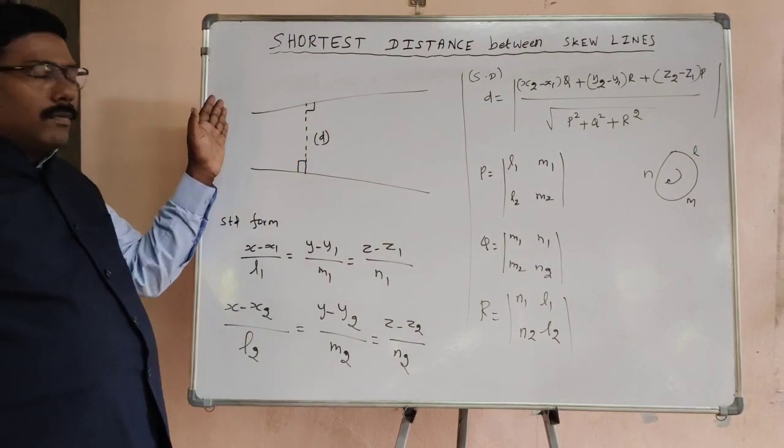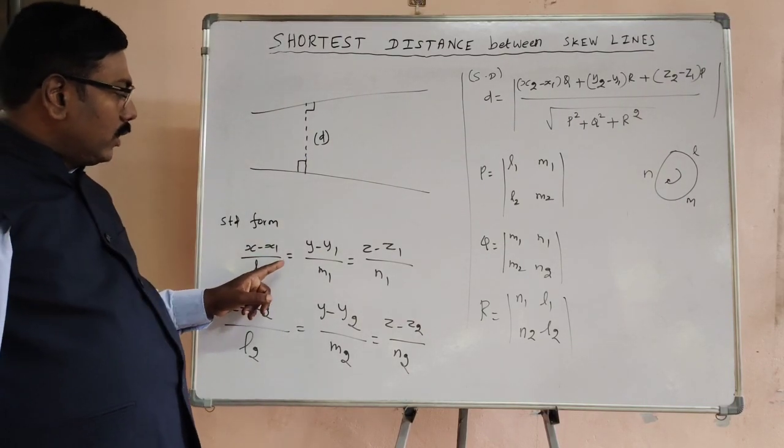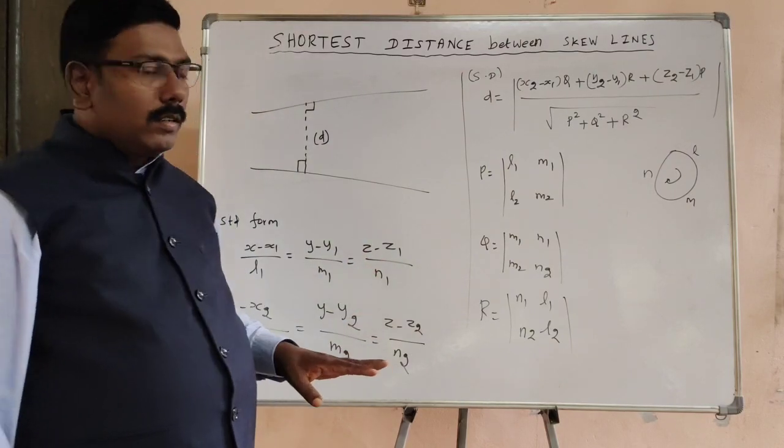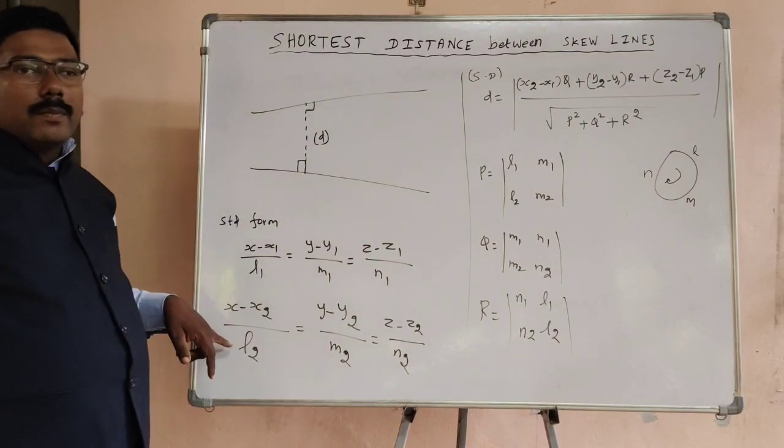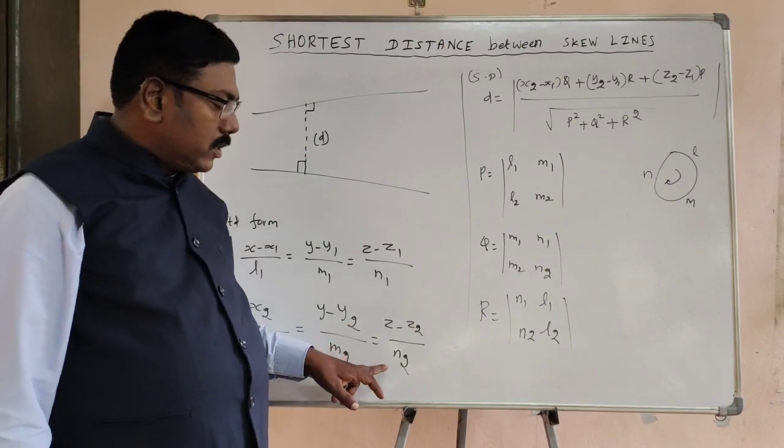The standard form of these two lines is x minus x1 by L1 equal to y minus y1 by M1 equal to z minus z1 by N1. And the second line, x minus x2 by L2 equal to y minus y2 by M2 equal to z minus z2 by N2.